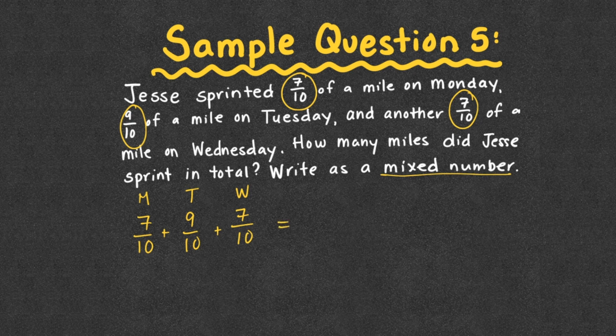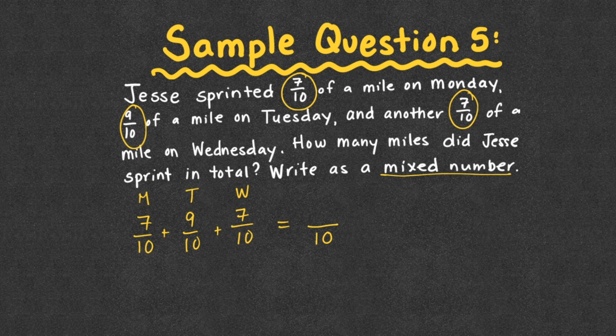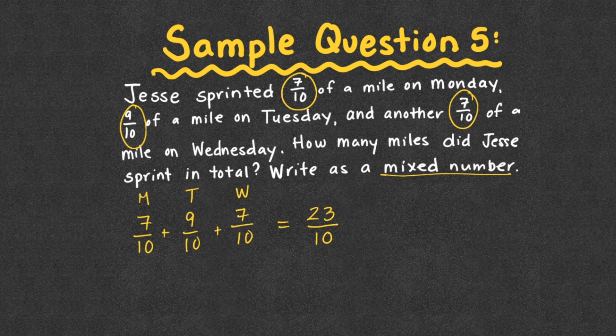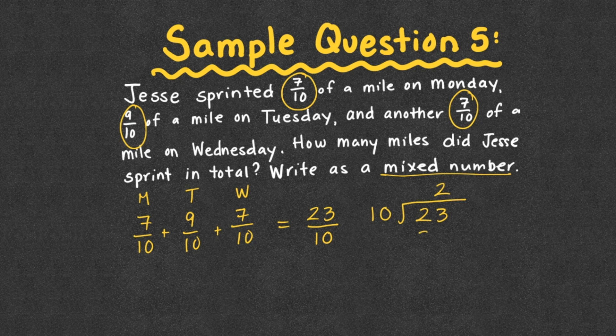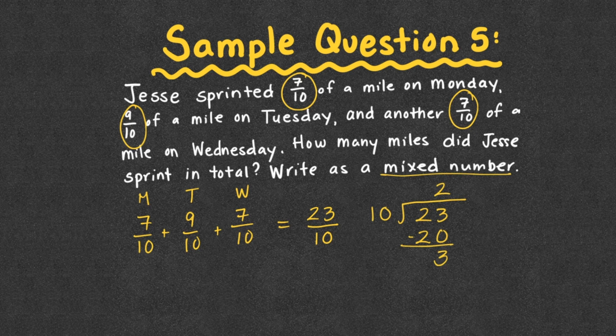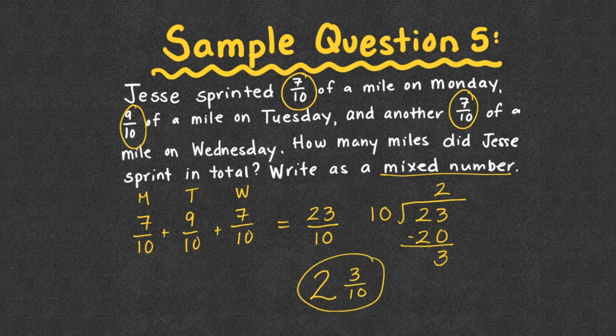So remember when we add fractions, we add the numerators only, the denominator is still going to stay 10. So 7 plus 9 is going to give me 16, plus 7 is 23, so I end up with a total of 23 tenths. So this really means 23 divided by 10, which is 2. 2 times 10 is 20, subtract, and we get 3 left over. So I want to get us out of just always using color coding, because sometimes we may not have that option. 10 went into 23 two whole times, with 3 out of 10 left over, so we get 2 and 3 tenths.